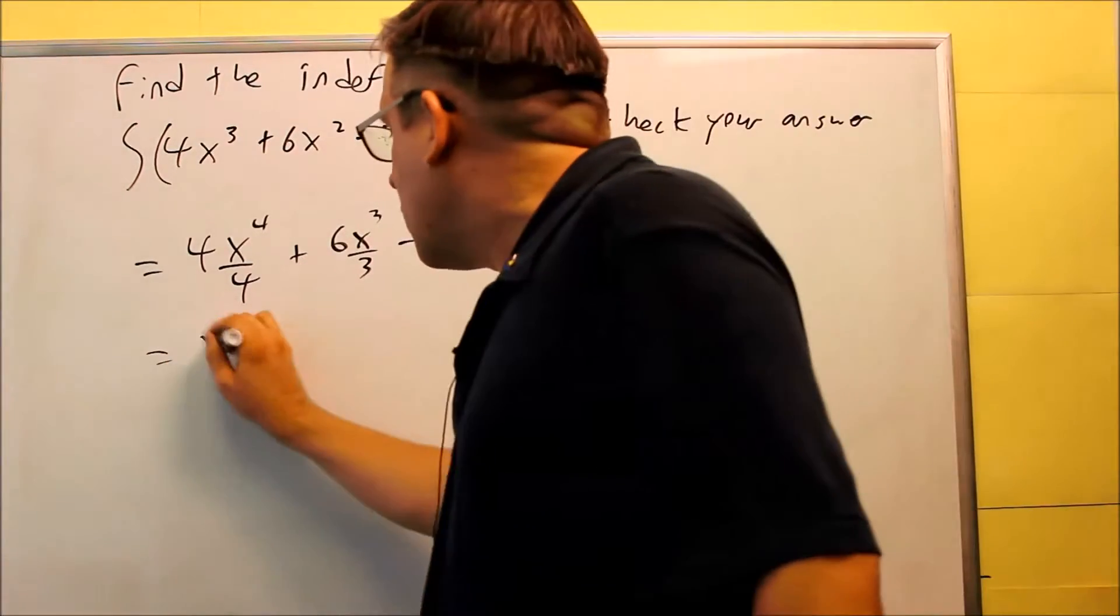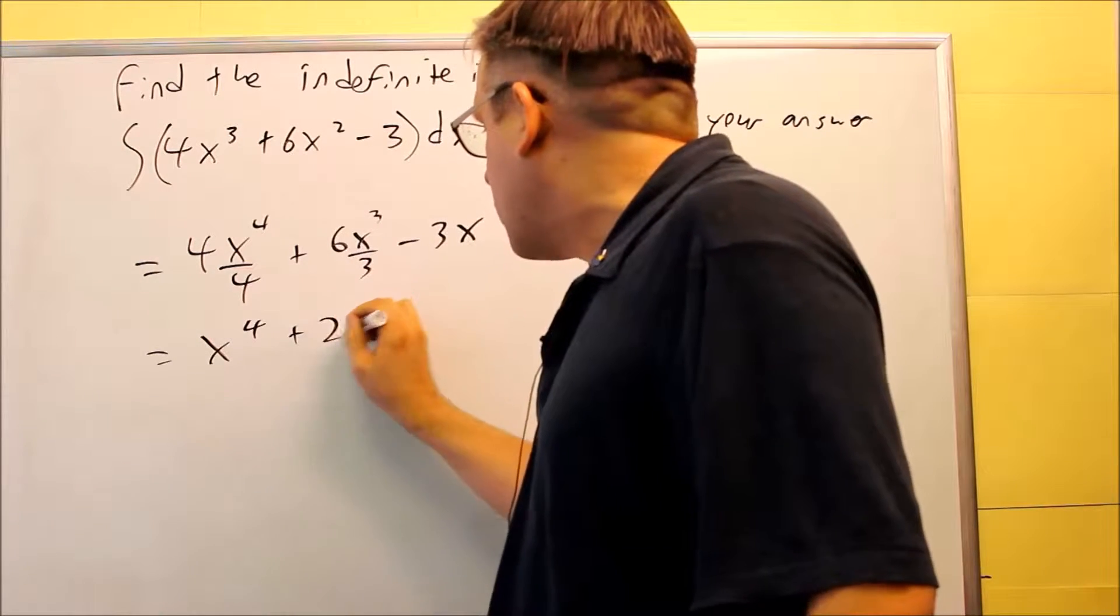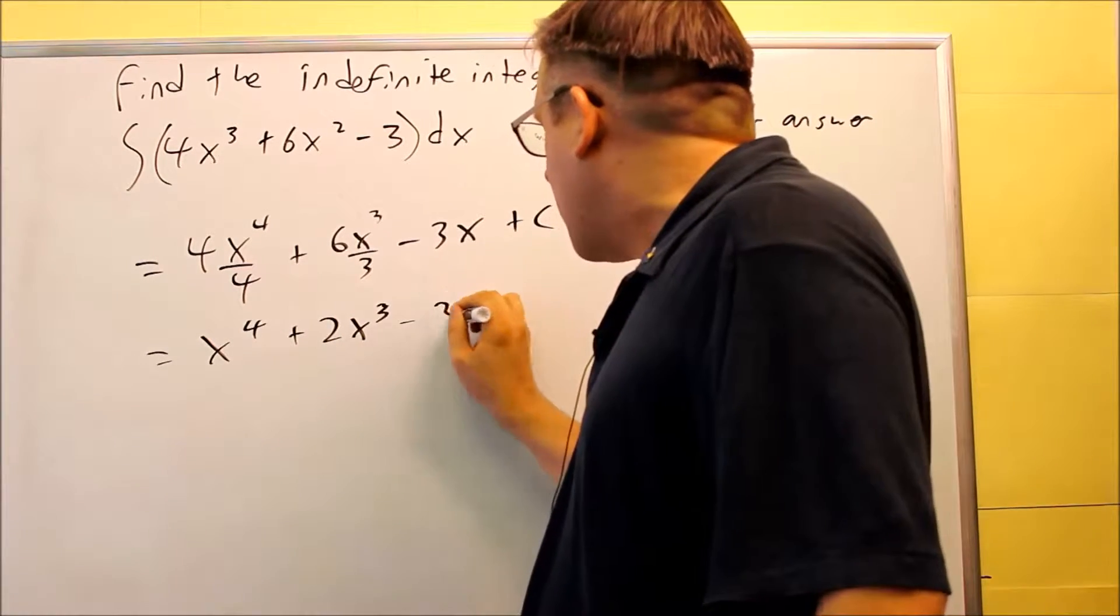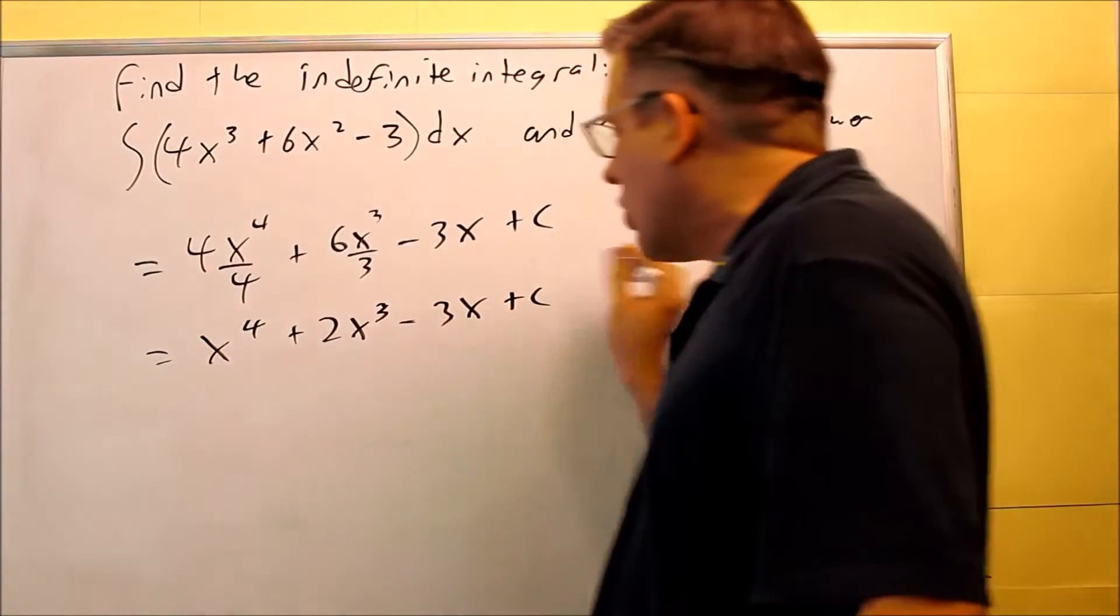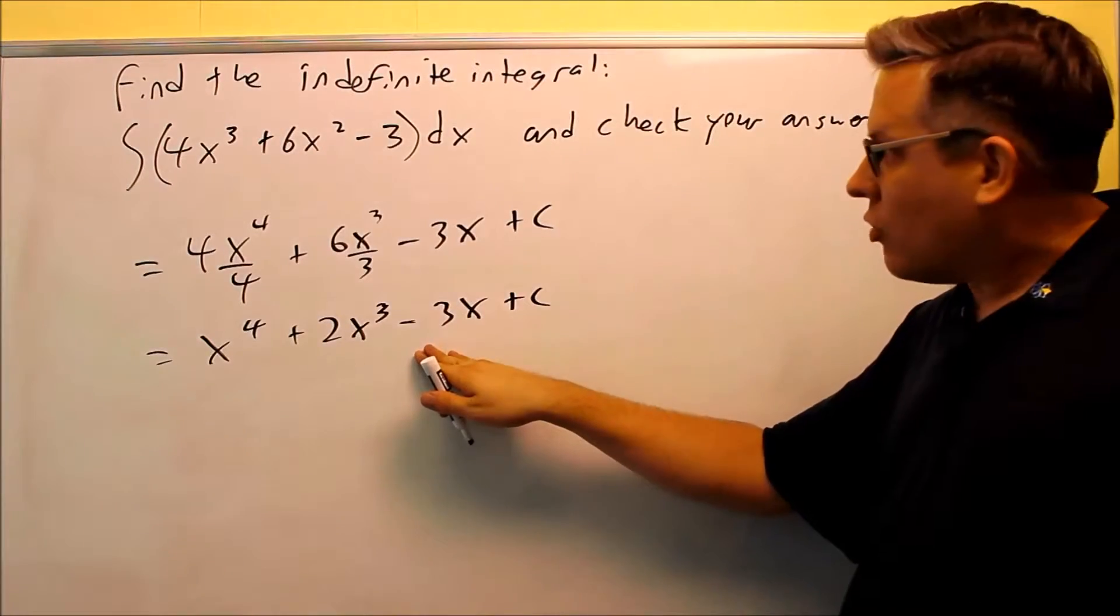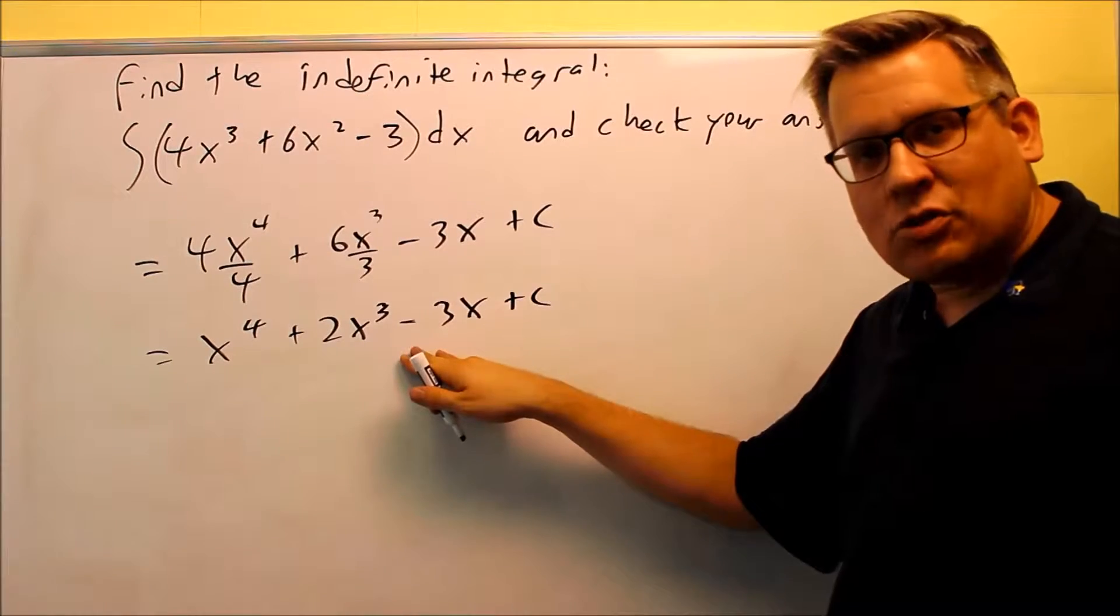This is going to simplify to x to the fourth plus 2x cubed minus 3x plus c. This right here is your answer to that question. This would be the anti-derivative.